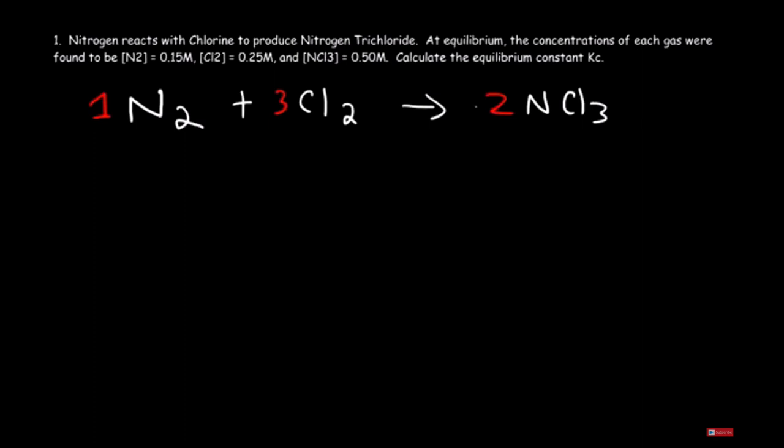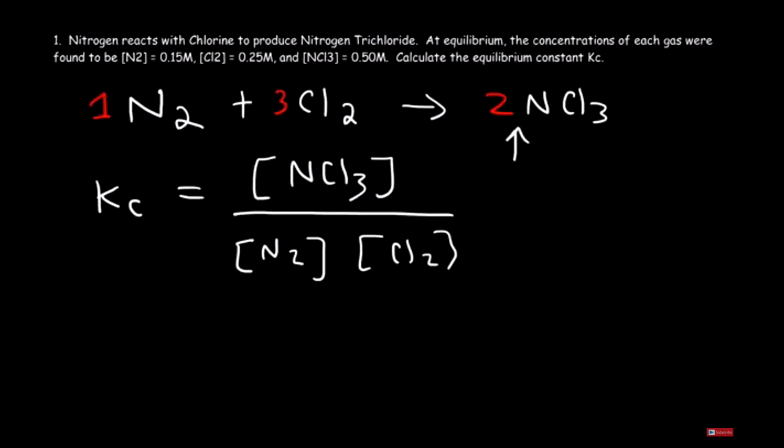Now the next thing we need to do is write the equilibrium expression for Kc. So Kc is the ratio of the products divided by the reactants. So it's going to be NCl3, that's a product, it's on the right side, and the stuff on the left side, N2 and Cl2, that's going to go on the bottom. Now when writing the equilibrium expression, you need to keep in mind that the coefficients of the balanced chemical equation become the exponents of the expression. So we have a two in front of NCl3, so we need to put that on the exponent of this equation. We have a one for N2 and a three for Cl2.